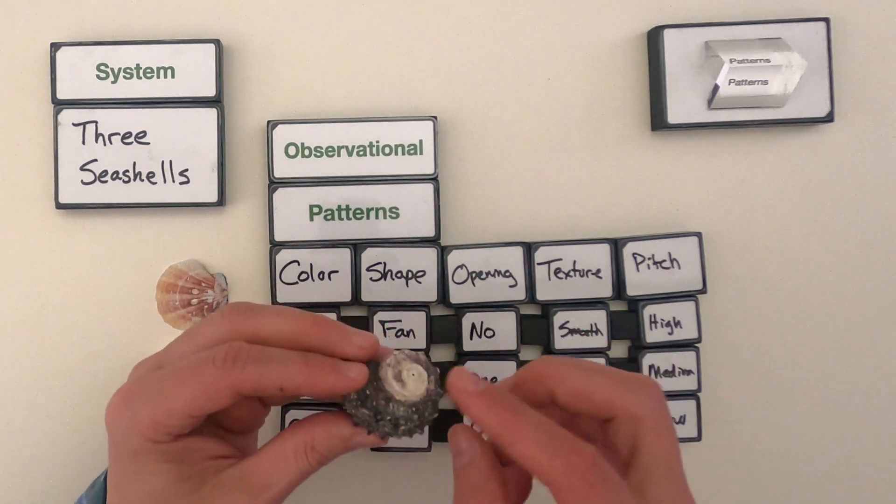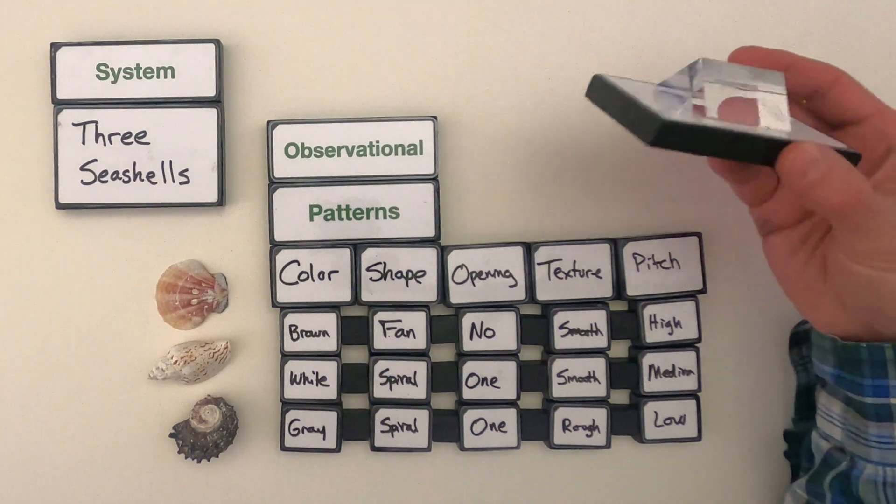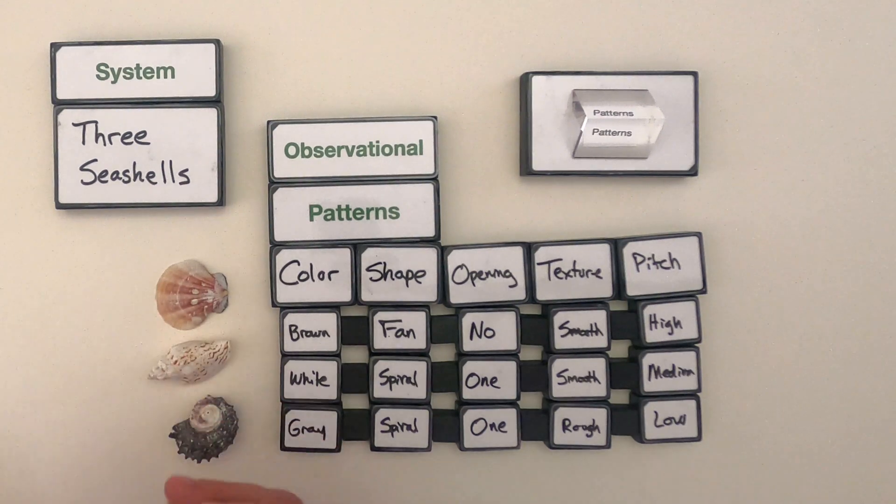Maybe that tells me something about the structure on the inside of the shell. So all we're doing when we're looking for observational patterns is just carefully looking at any kind of system from a number of different angles. We're using our senses so we can better understand that system.